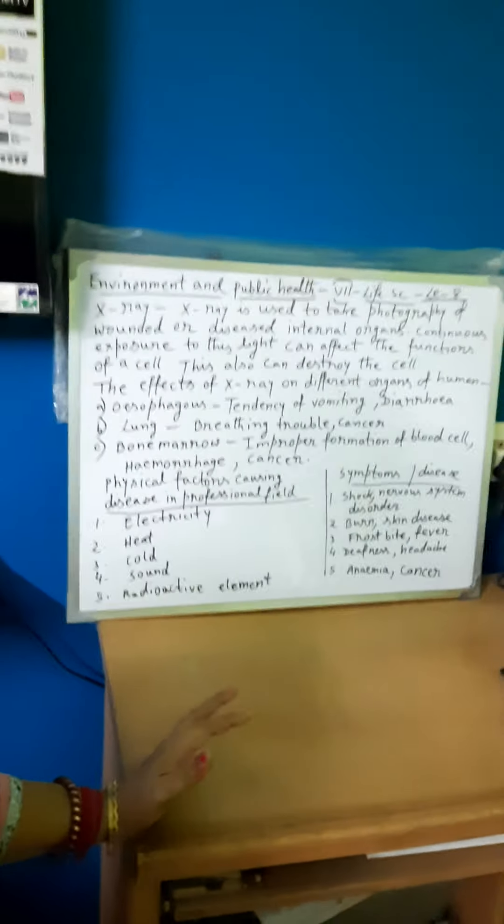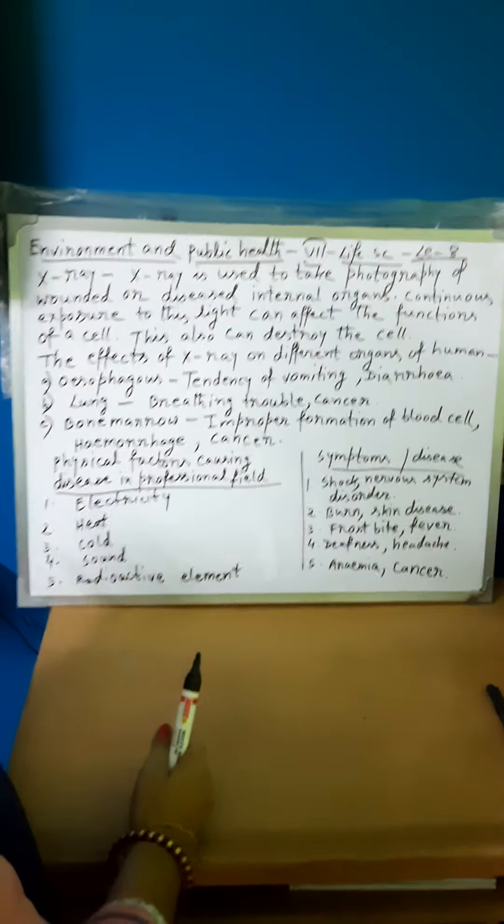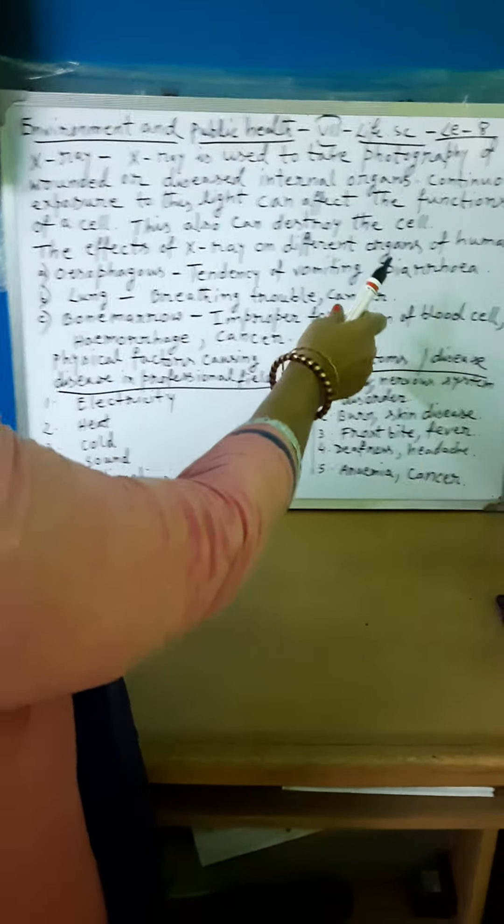Continuous exposure to this light can affect the functions of a cell. The cell is the structural and functional unit of the body. These rays have so much power that they can destroy the cell.